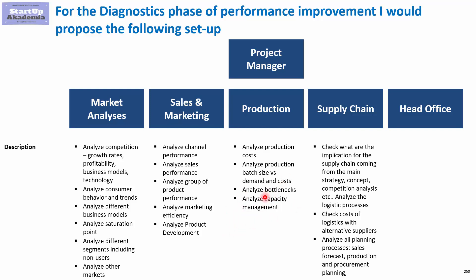Especially if it's a more complicated company where adding capacity takes time, you also have to make sure they are addressing these issues. In supply chain, you first look at the strategic fit between the overall strategy of the company and the execution of the supply chain strategy — whether they have the type of supply chain they need. Then you look at costs and analyze the whole planning process: sales forecast, connection of the sales forecast with production planning and procurement planning, and how feedback flows through the planning process.